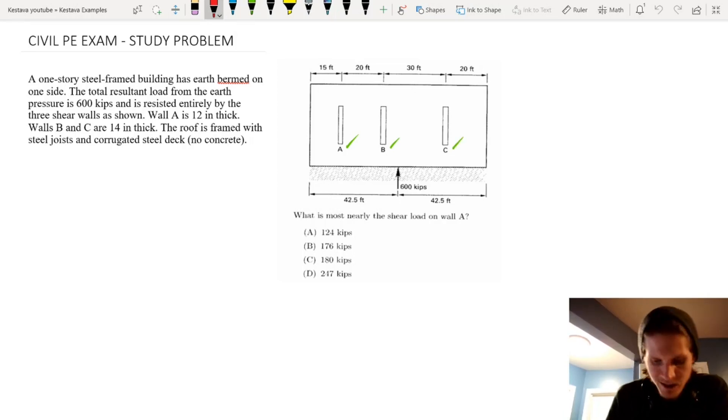Wall A is 12 inches thick. Walls B and C are 14 inches thick. The roof is framed with steel joists and corrugated steel deck. No concrete. What is most nearly the shear load on wall A?